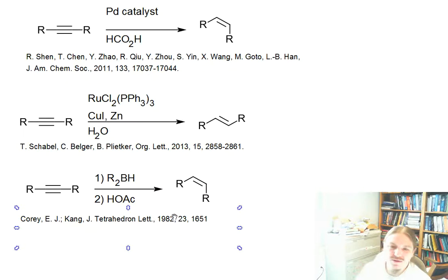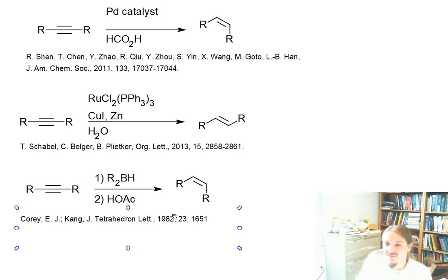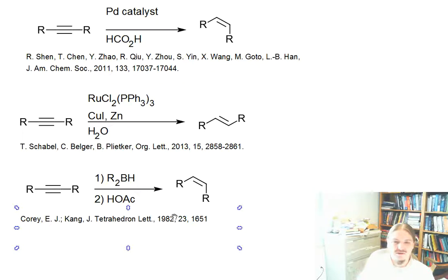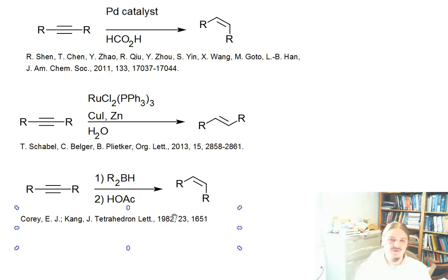And then finally, this one's a little bit older — I actually picked it because it's from 1982, the year I was born — just to highlight that sometimes the things we learn about in introductory organic chemistry have actually been around for a long time, and there are newer things that aren't all that new that sometimes don't get put in textbooks. Here is another way to make a cis alkene without using a metal catalyst. Metal catalysts are actually pretty expensive. E.J. Corey and J. Kang in 1982 figured out how to use a borane to do hydroboration, but instead of oxidizing the borane intermediate, they reacted it with acetic acid, which led to partial reduction of the alkyne and formed the cis product.